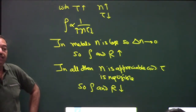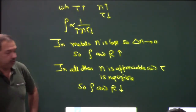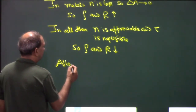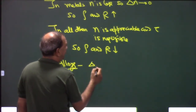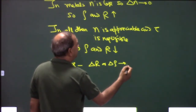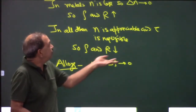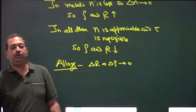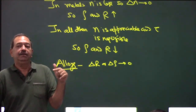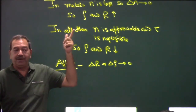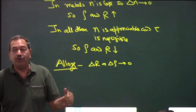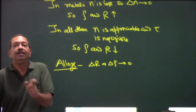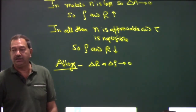For alloys, the change in resistance with temperature is negligible — it approaches zero. This is because alloys are made by combining two materials: one whose resistance increases with temperature, and one whose resistance decreases with temperature. When temperature rises, one substance's resistance increases while the other decreases, so the net change is zero.